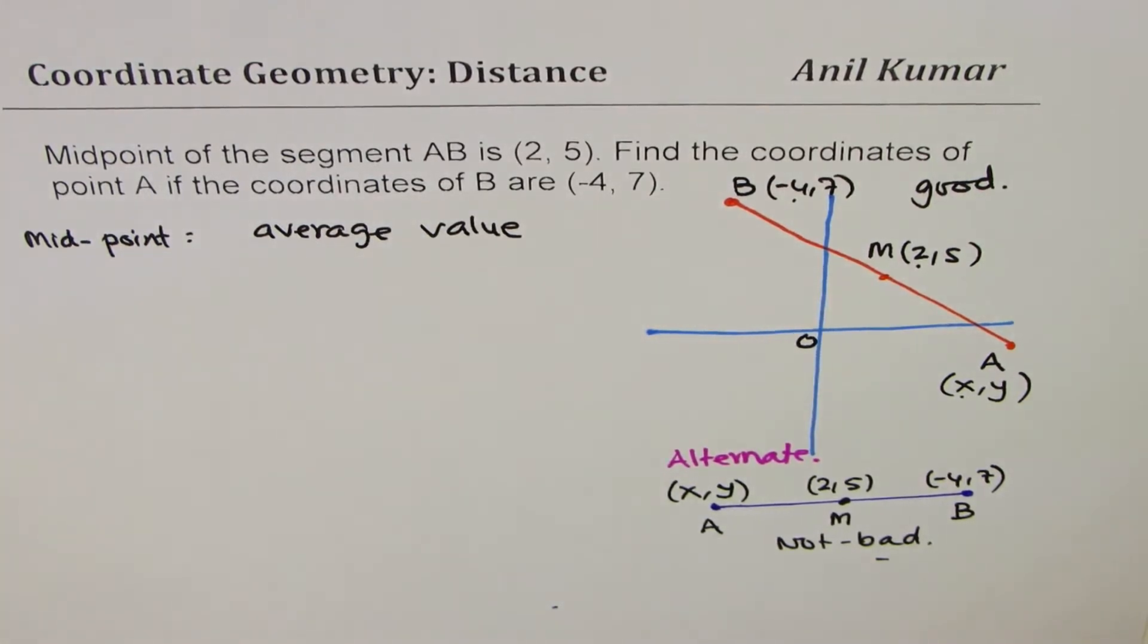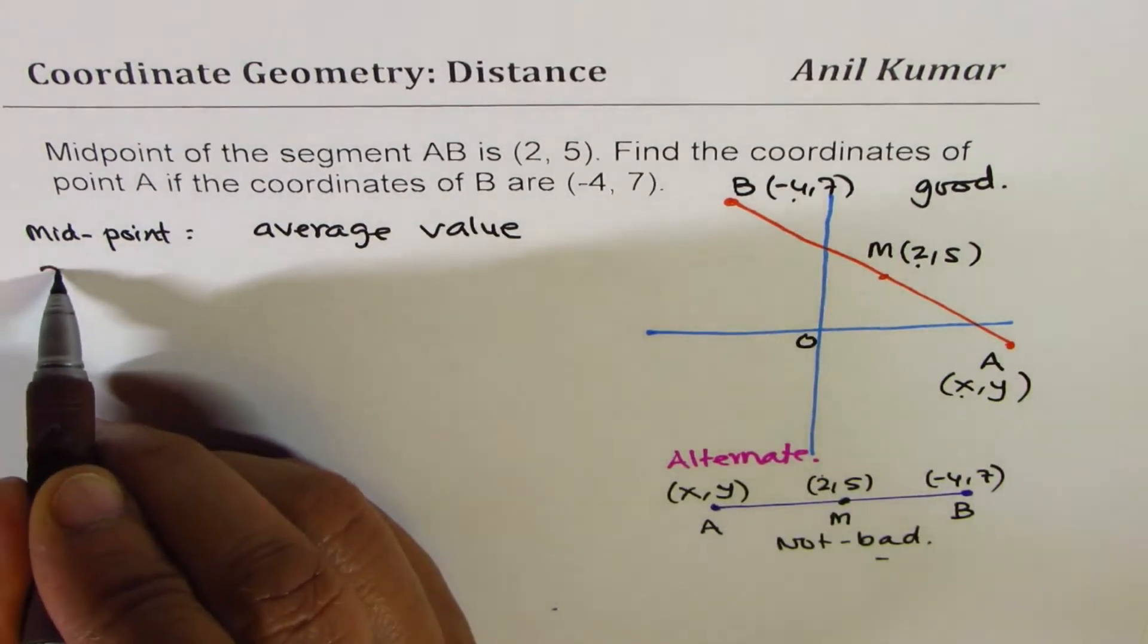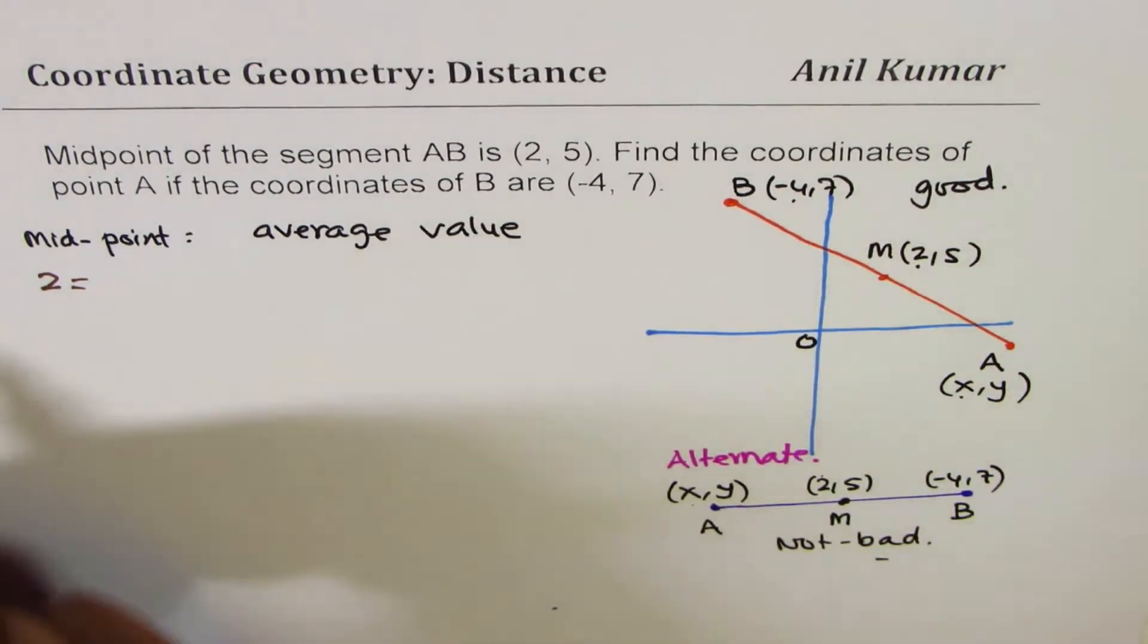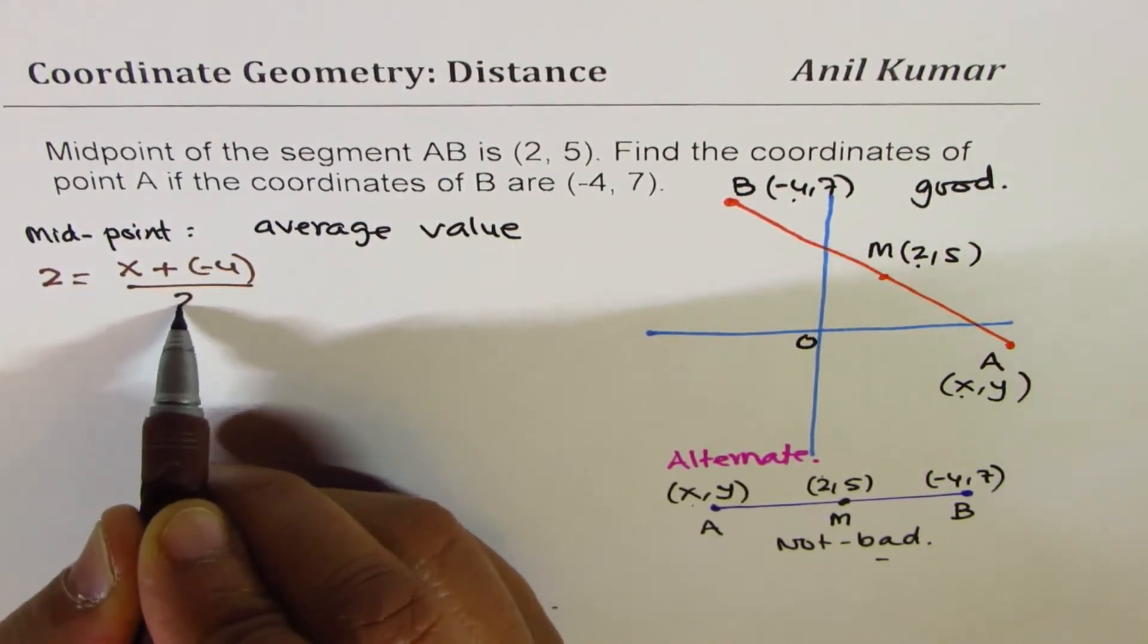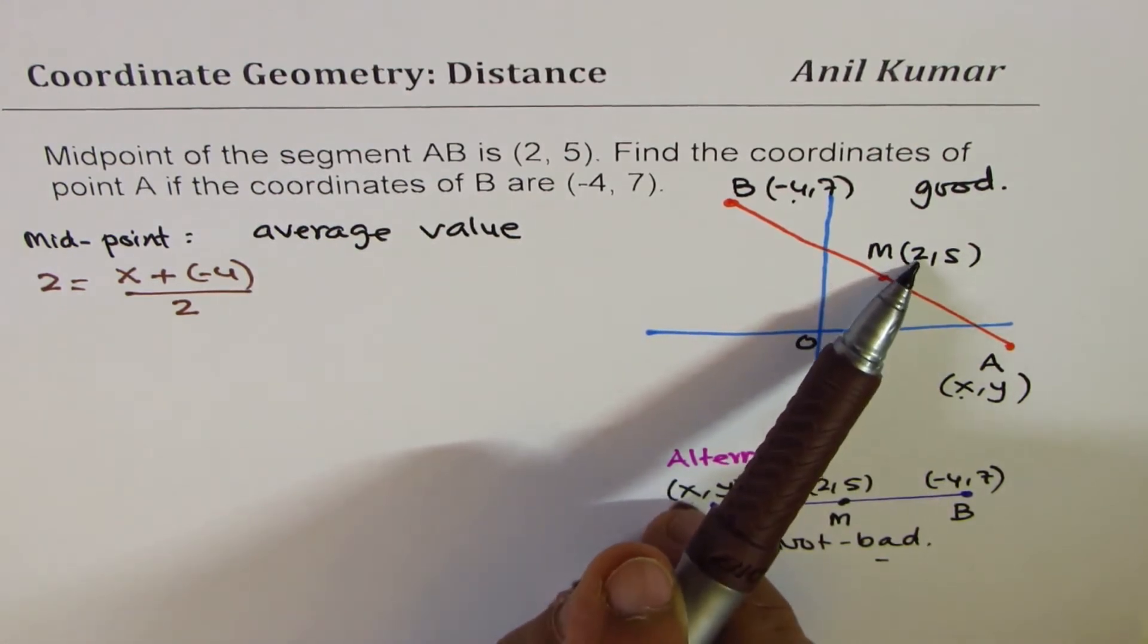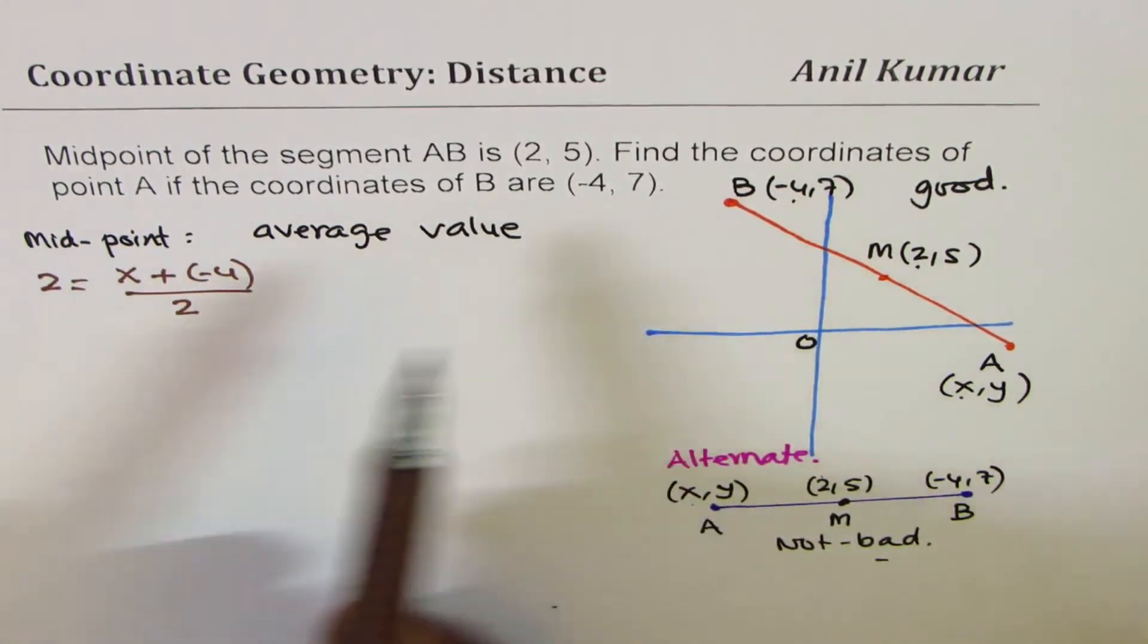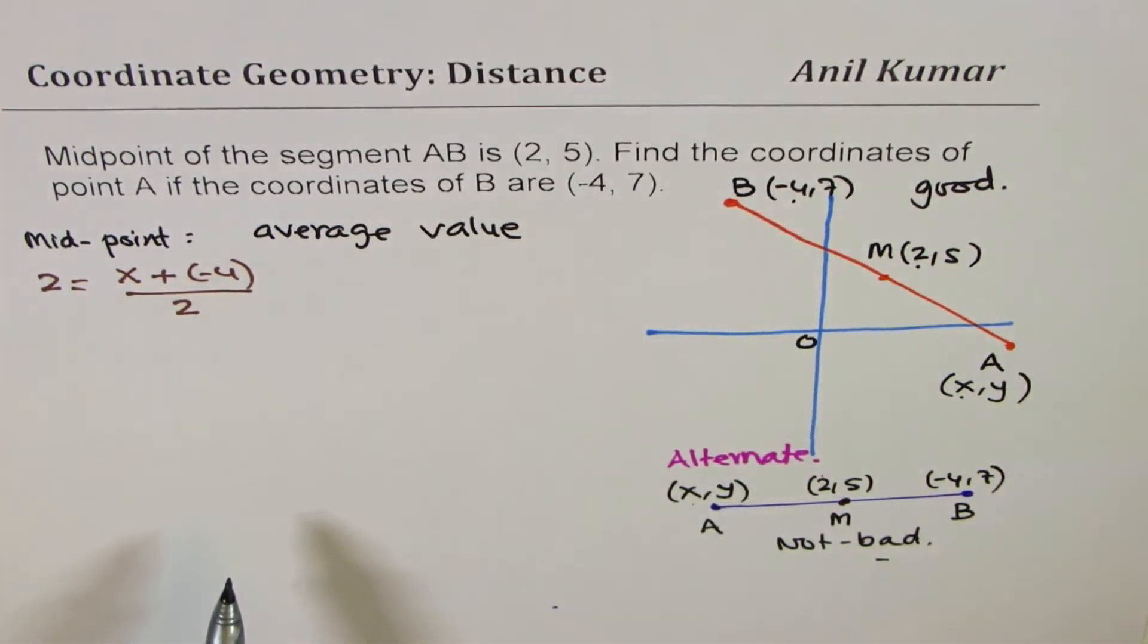So what we're trying to say here is that point 2, the x value of midpoint, is average value of x and -4. So we can write this as (x + (-4)) divided by 2. Or if you make this diagram, then this 2 is average of these two points. So either way you can write, but that is what you get. 2, the x value, is average of these two. Perfect.